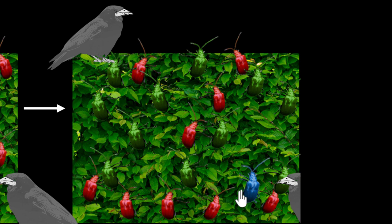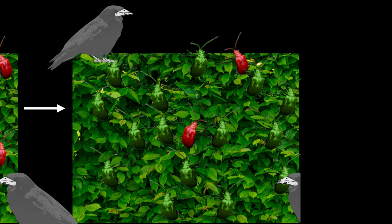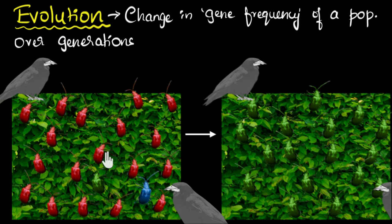Maybe the blue beetles also start getting eaten, and before they have a chance of passing their DNA, they get completely wiped out. That's totally possible because they were a minority, had no advantage, and so they are completely gone. After many years, we might find that all the red beetles are gone and only the green beetles have survived.